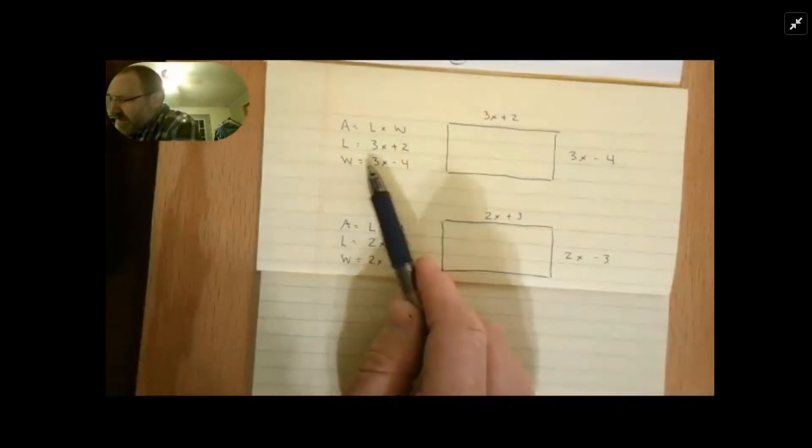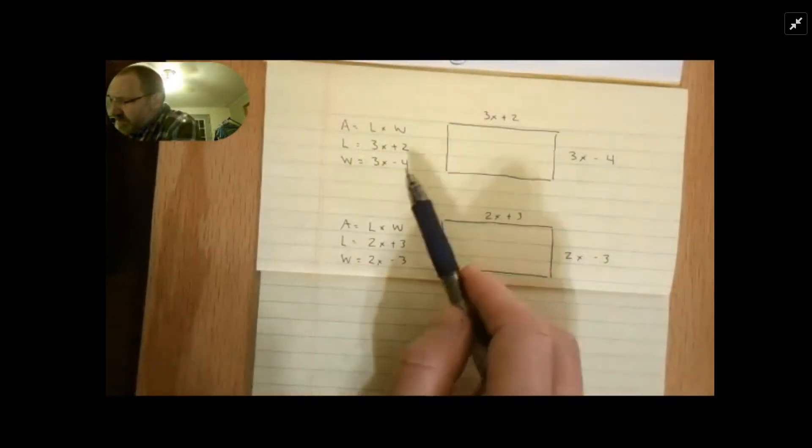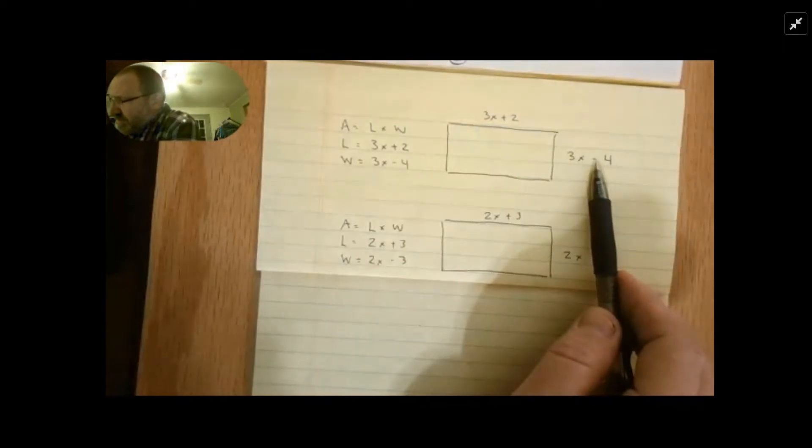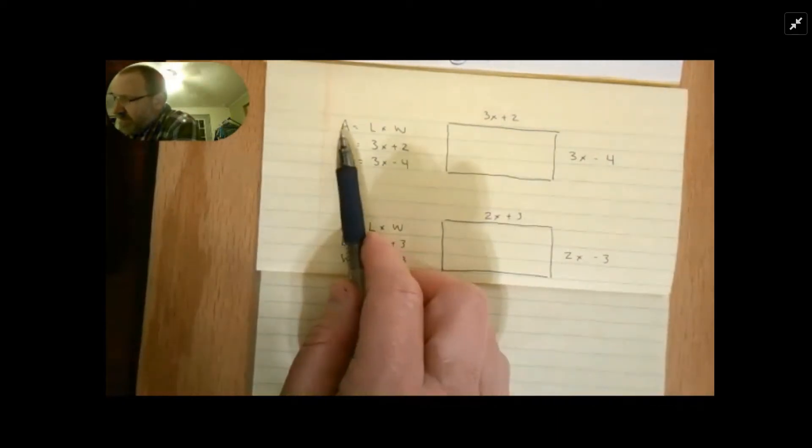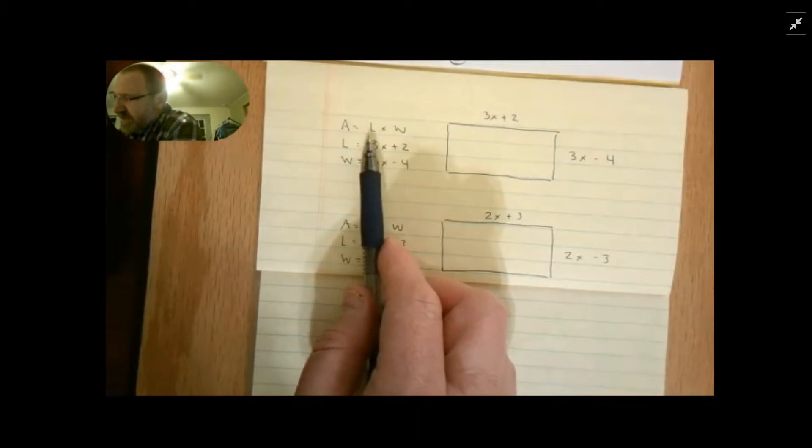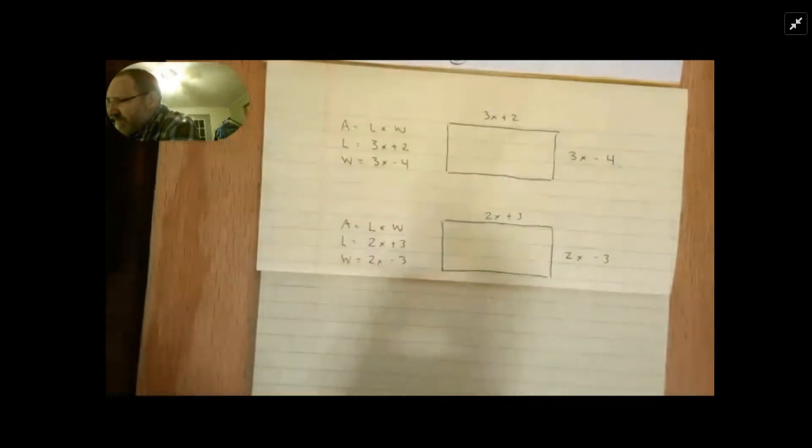So the length is 3x plus 2 and the width is 3x minus 4. We were trying to find the area so we know the formula for any area of a rectangle is length times width. I don't want to take all the fun away. I want you to get a chance to work this problem yourself because they're fun problems to work.